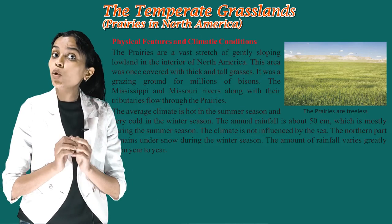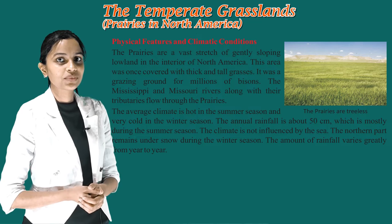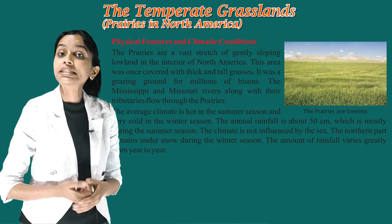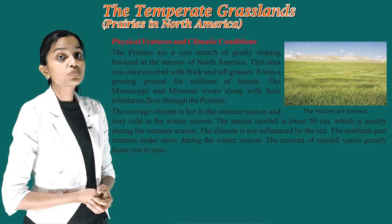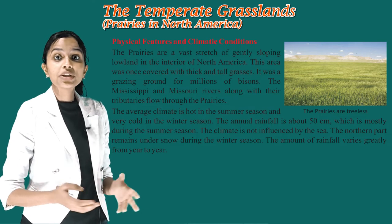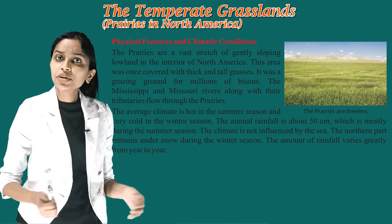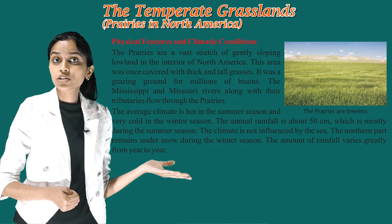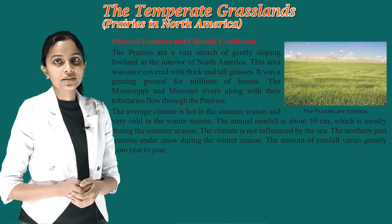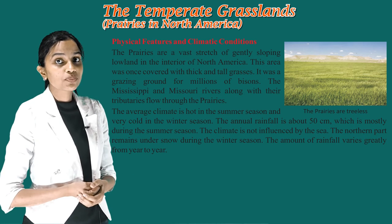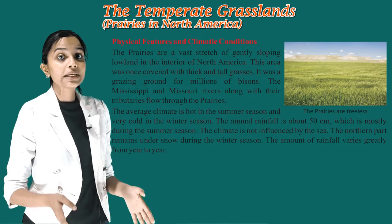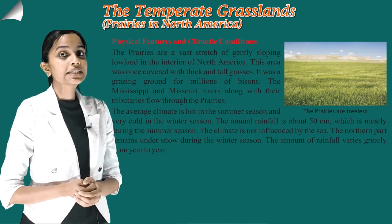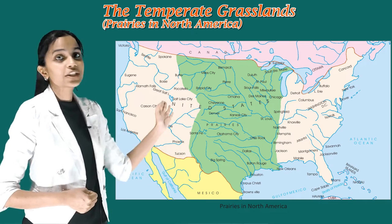The average climate is hot in summer and very cold in winter. The annual rainfall is about 50 centimeters, mostly during the summer season. The climate is not influenced by the sea. The northern part remains under snow during winter, and the amount of rainfall varies greatly from year to year. Now, children, see the map of prairies in North America.